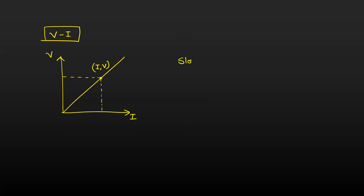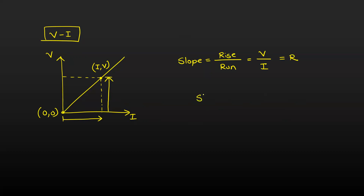The slope is rise divided by run. Rise is the height — that is the voltage or potential difference — and run is this length — that is the current. Since the graph passes through the origin (0, 0), the slope is V divided by I, which is nothing but the resistance value. So for a V versus I graph, slope equals resistance. Higher slope means higher resistance.